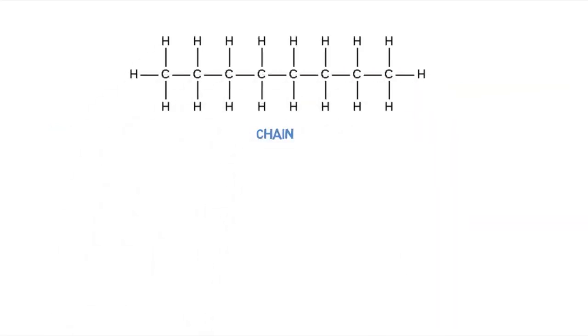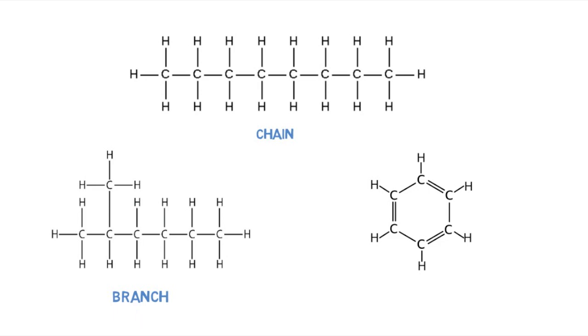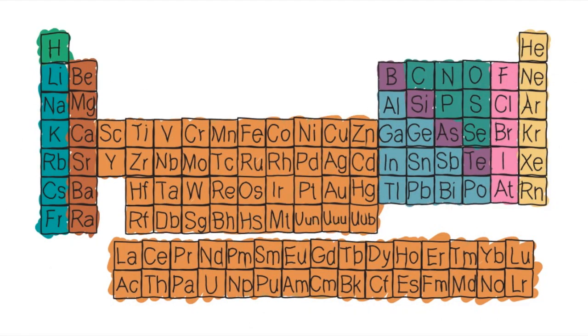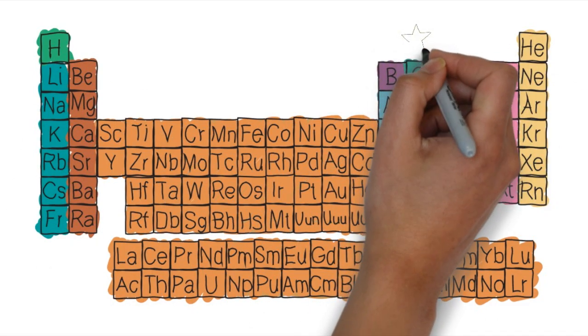Carbon can form chains, branches, rings, and combinations of these. What makes carbon so special? It is just the right size and in just the right place in the periodic table.